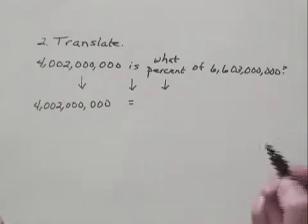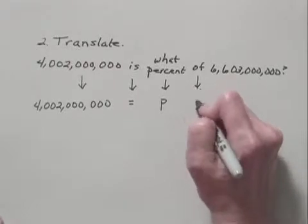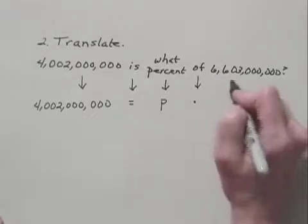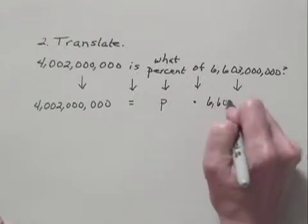What percent? This is what we're trying to find. Remember, we've let P represent that. Of gives us multiplication, and then we have the number 6,603,000,000.